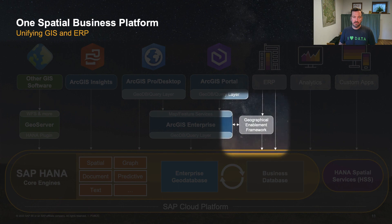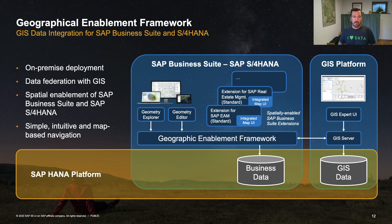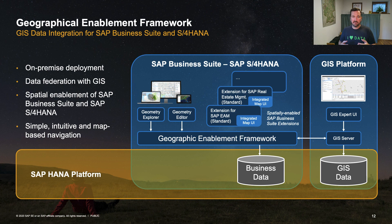To integrate your GIS software such as ESRI ArcGIS with your ERP system, you can use the Geographical Enablement Framework. It builds the bridge on an application layer between the ERP and the GIS platform. On top of that, it offers simple, intuitive, and map-based navigation through your business data.